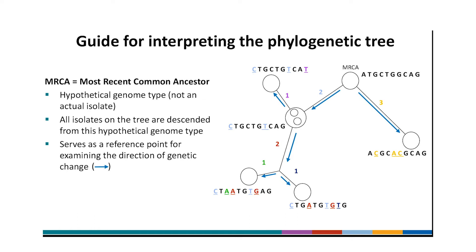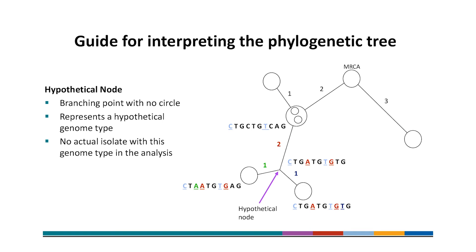On this tree, if we start at the MRCA and move down the branch on the right, there are three SNPs shown in yellow, and that isolate has those three SNPs. But if we move down the other branch on the left, we come to a first node with two isolates that have two different SNPs shown in blue. From there, moving up the branch, there is an isolate with those same two blue SNPs plus one more SNP shown in purple. Starting back at the node with the two isolates and moving down the branch, the two isolates at the bottom have the two blue SNPs plus two red SNPs, and each one has one additional SNP — one has a green SNP and one has a dark blue SNP. Trees also sometimes have a branching point with no circle, called a hypothetical node, which represents a hypothetical genome type with no actual isolate in the analysis.